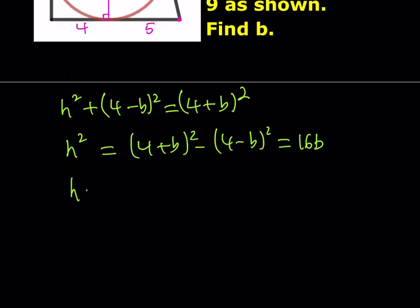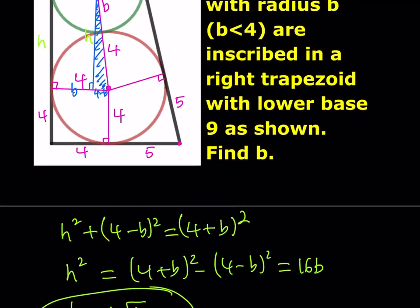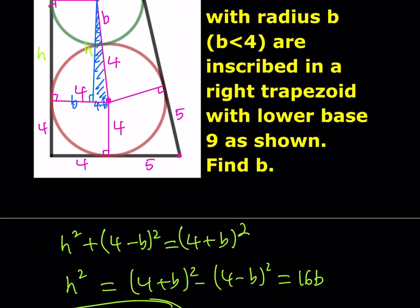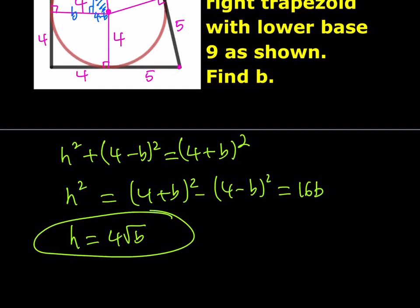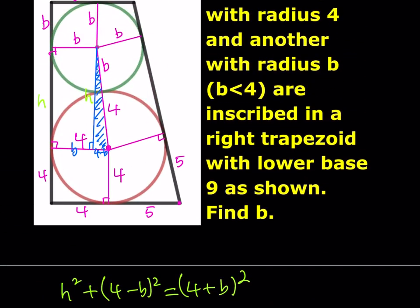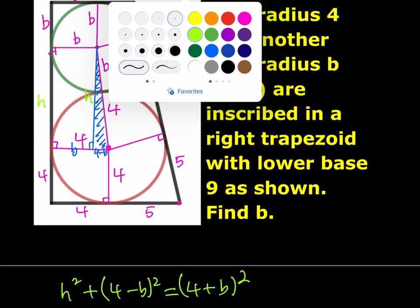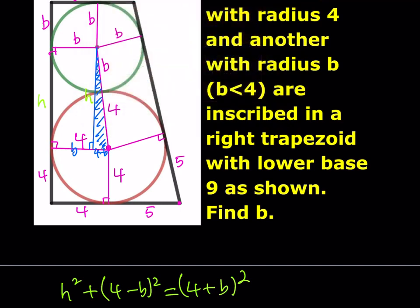We were able to express h in terms of b, which means we can find the full height of the bigger trapezoid. Now the next thing I'm going to look at involves drawing some angle bisectors.